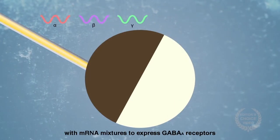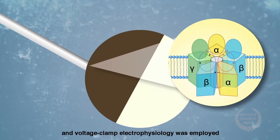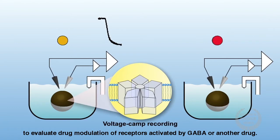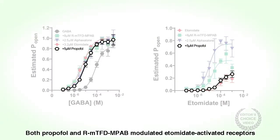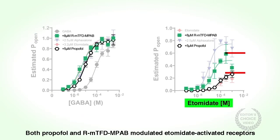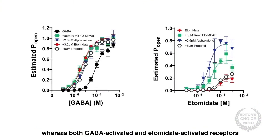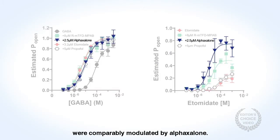In addition, Xenopus oocytes were injected with mRNA mixtures to express GABA receptors, and voltage clamp electrophysiology was employed to evaluate drug modulation of receptors activated by GABA or another drug. Both propofol and RMTFD-MPAB modulated etomidate-activated receptors to a lesser degree than GABA-activated receptors, whereas both GABA-activated and etomidate-activated receptors were comparably modulated by alfaxilone.